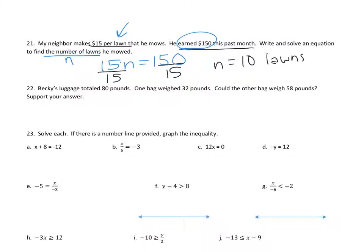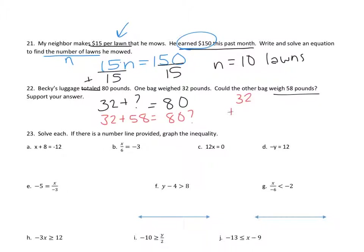Number twenty-two — Becky's luggage totaled 80, meaning it added up to 80. One bag weighed 32 pounds. Could the other bag weigh 58 pounds? If you plug in 32 plus 58, do you get 80? 2 plus 8 is 10, 1 plus 3 is 4, plus 5 is 9 — so no, it wouldn't work.